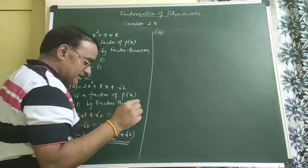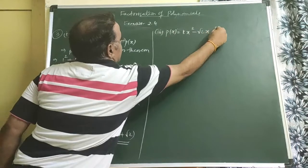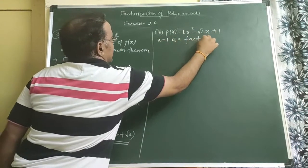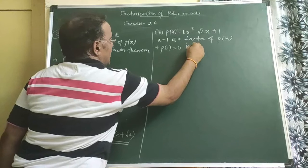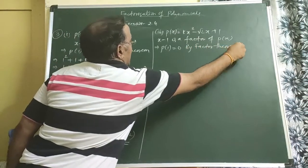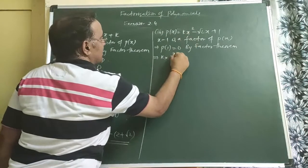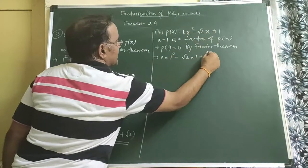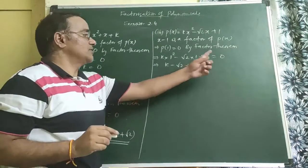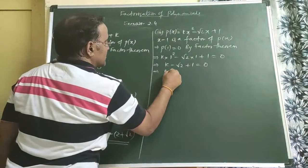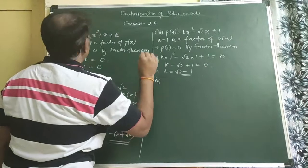Third bit: P(x) = kx² − √2x + 1. Since (x − 1) is a factor, P(1) = 0. Substituting x = 1: k(1)² − √2(1) + 1 = 0, giving k − √2 + 1 = 0, so k = √2 − 1.